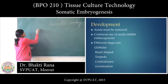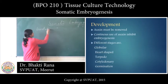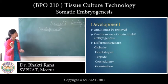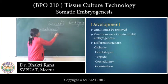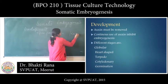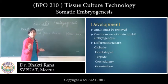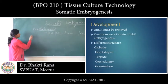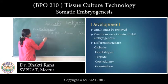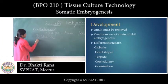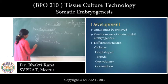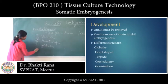The second stage is development. An important point is that during development the medium should be free from auxin or have very low auxin concentration, because auxin inhibits the development of somatic embryogenesis. The different shapes formed during development are: globular, heart-shaped, and cotyledonary.